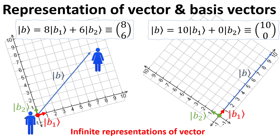Bob could also rotate the coordinate system such that the basis vector b1 is now collinear, or parallel, with b-ket. In this case, the b-ket vector has column elements 10 and 0. These examples illustrate that there are infinite representations for the same vector. Thus the enumeration of the vector is meaningful only if one defines what the basis vectors, or the representation used, are.